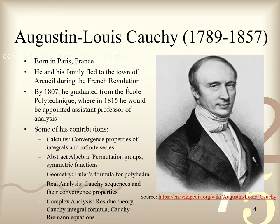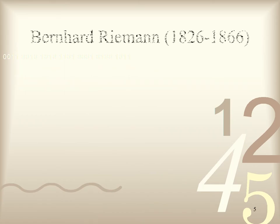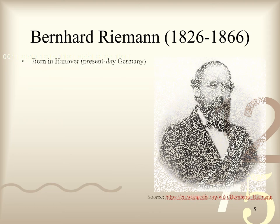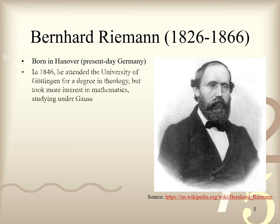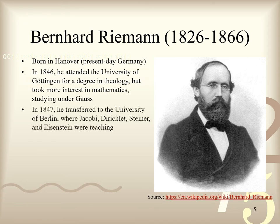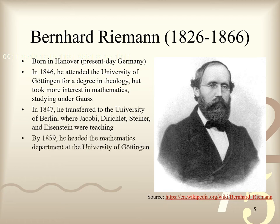We shall discuss the historical background of Riemann next. Bernhard Riemann was born in the early 19th century in the Kingdom of Hanover, part of present-day Germany. From an early age, Riemann exhibited exceptional mathematical and computational skills. In 1846, he attended the University of Göttingen to pursue a degree in theology, but he took more interest in mathematics, studying under Gauss. In 1847, Riemann got approval from his father, a Lutheran pastor, to transfer to the University of Berlin to pursue his mathematical interests. This was where the mathematicians Jacobi, Dirichlet, Steiner, and Eisenstein were teaching around that time. By 1859, Riemann headed the mathematics department at the University of Göttingen.